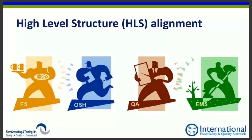The high-level structure alignment means all four standards have the same parallel clauses, often redundant with each other. Where each standard deals with its own specific agenda there will be divergence, but everything generic — document control, policy setting, setting goals, interpretation of results, corrective actions — is identical across all four standards. That's the major change.